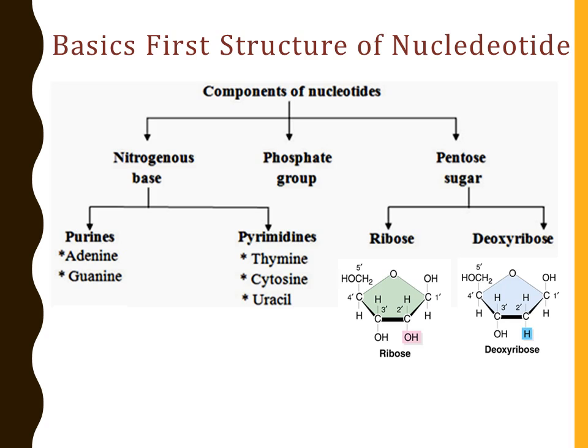One more important point — compare the structure of ribose sugar and deoxyribose sugar. We find a hydroxyl group at the 2' position in ribose sugar, whereas a hydrogen group at the 2' position in deoxyribose sugar. This presence of a hydroxyl group at the 2' position in ribose sugar makes it more reactive than deoxyribose sugar.